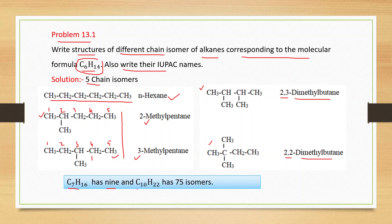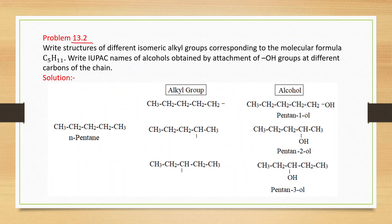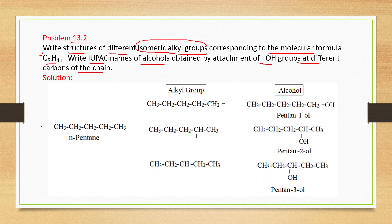C7H16 has 9 isomers and C10H22 has 75 isomers. Now Problem 13.2: write structures of different isomeric alkyl groups corresponding to the molecular formula C5H11, and write IUPAC names of alcohols obtained by attachment of OH groups at different carbons of the chain. For C5H11, we can create a structure of pentane — pentane has three isomers.